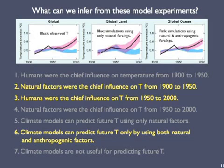Statement 1 is not true — human factors didn't make much of a difference from 1900 to 1950. The observed curves are tracked well by the blue all-natural bands, so statement 2 is true. But from 1950 to 2000, the blue all-natural band doesn't cut it; only by adding the human impacts included in the pink band do the simulations track the observations. Thus, statement 3 is true, but statement 4 is not. For climate models to tell us anything useful about future climate, they must account for both natural and anthropogenic forcings. Thus, statement 6 is true, and statements 5 and 7 are not.